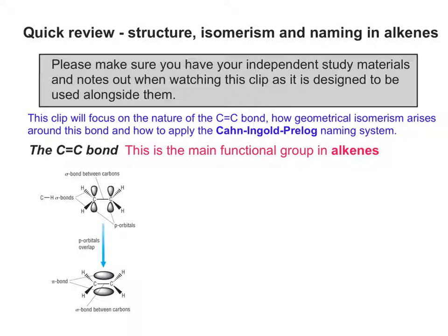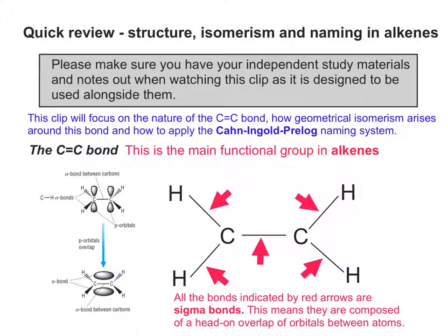The carbon-carbon double bond is the main functional group in alkenes, which gives them their chemistry and also their isomerism. If we take a diagram that represents what happens during the formation of a carbon-carbon double bond — which I've imported and put on the left — I'll explain what that diagram actually means. Starting with ethene, the simplest alkene, all the bonds indicated by red arrows are called sigma bonds.